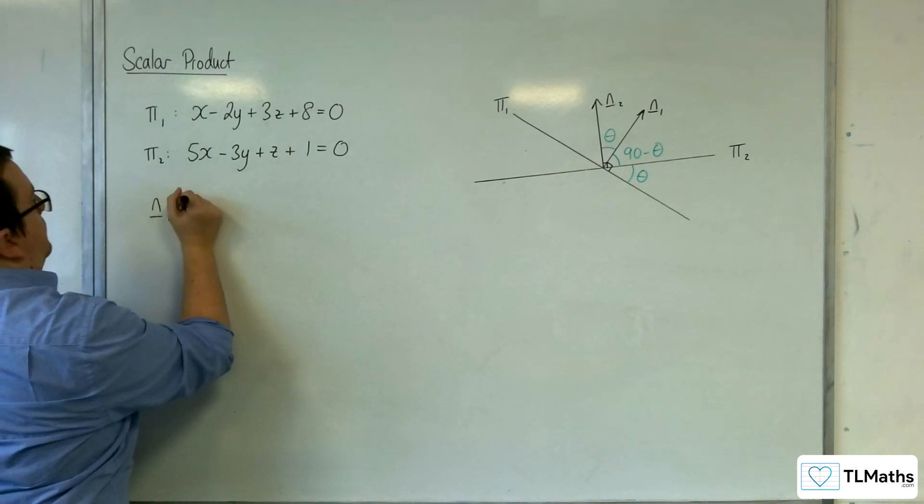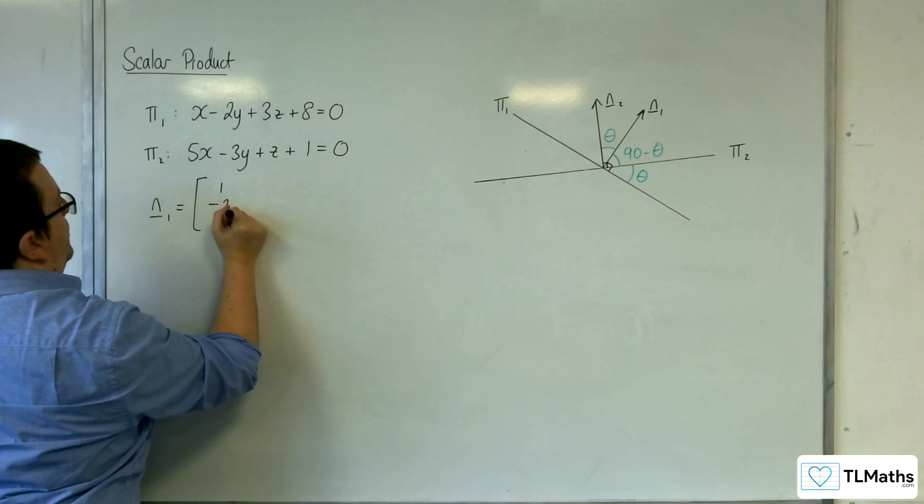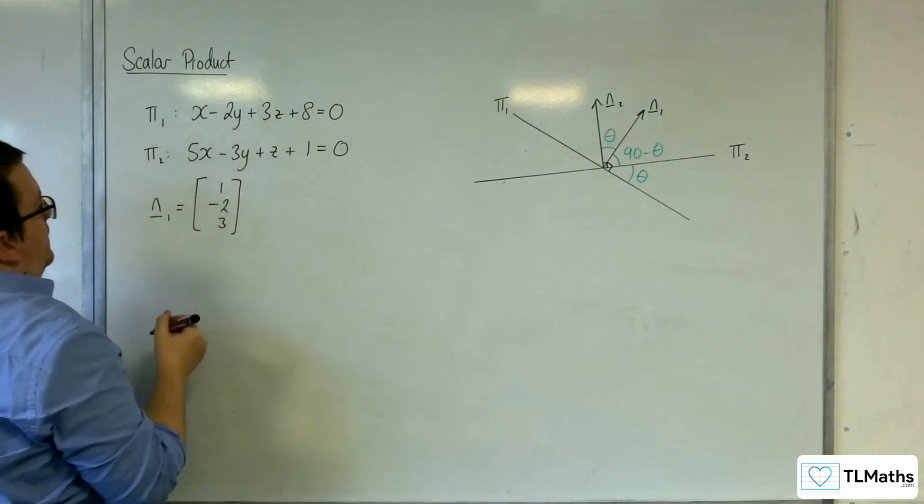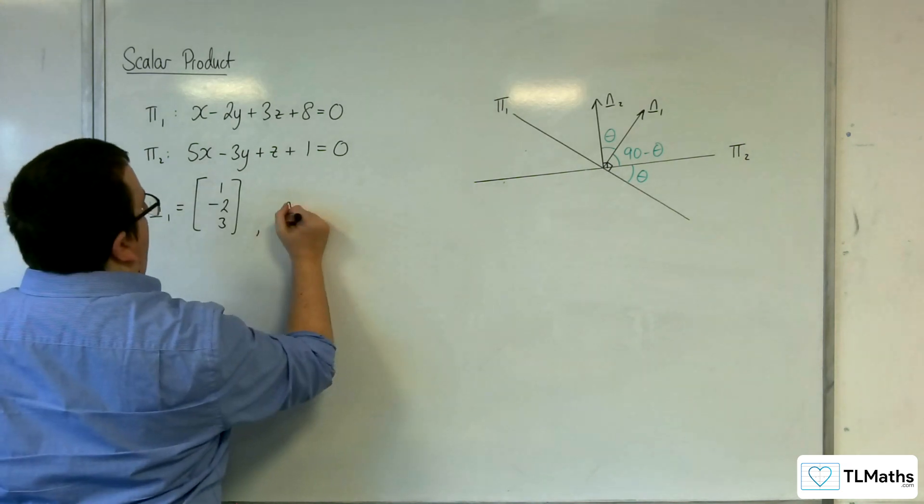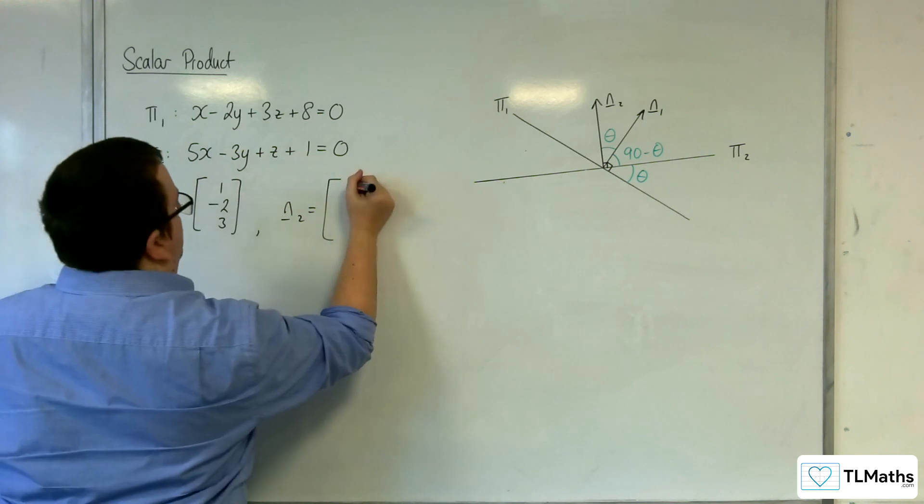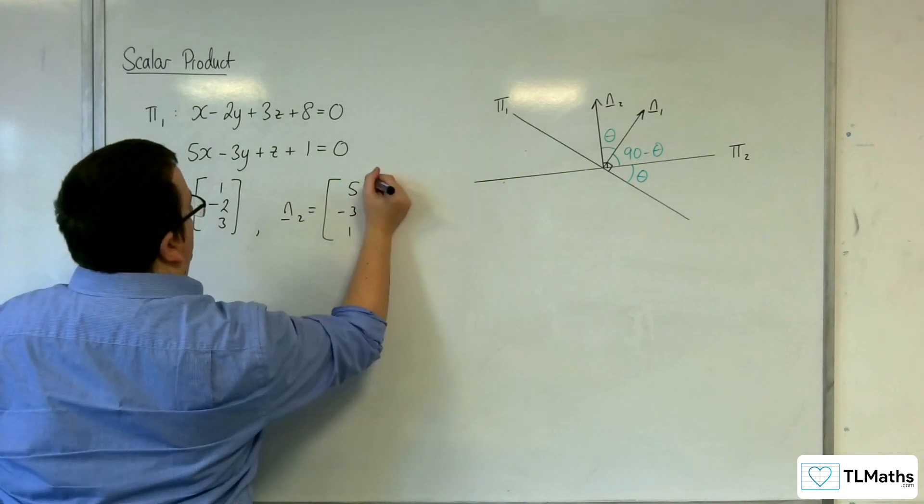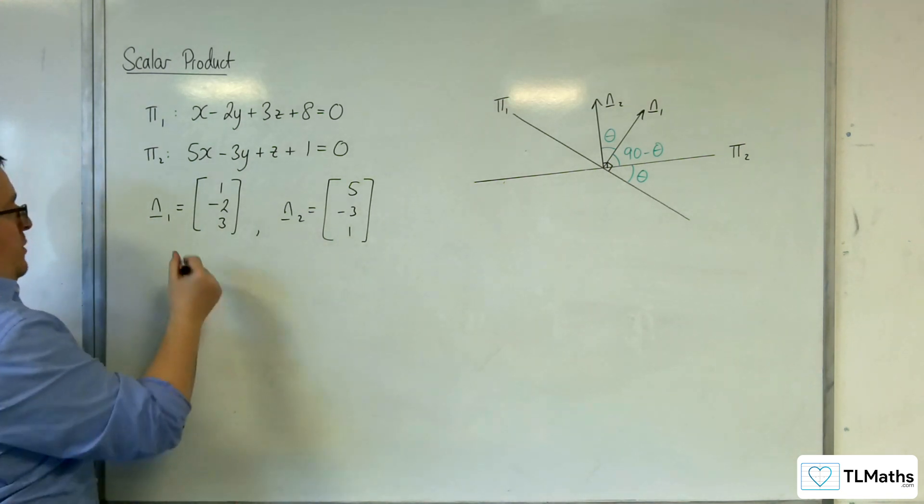So n1 would be equal to 1 minus 2, 3, the coefficients of the x, y, z. The 8's got nothing to do with it. And we've got n2 is equal to 5 minus 3, 1. So if I find the angle between these two vectors, then I'm home and dry.